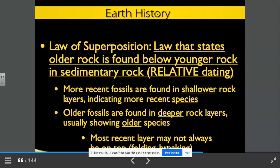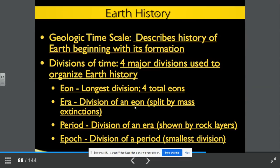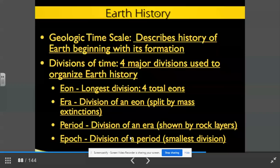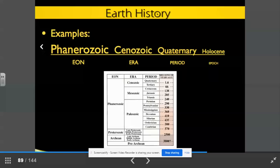The geologic time scale describes the history of Earth beginning with the Earth's formation. The divisions of time. There are four major divisions used to organize our Earth history. The eon, the longest division of time. There are four total eons. Era is the division of an eon, split by mass extinctions. The period is the division of an era, shown by rock layers. And the epoch is the division of a period, the smallest division. Here are some examples. We have the eon would be Phenerozoic, the era, Cenozoic, the quaternary period, and the Hallocene epoch.